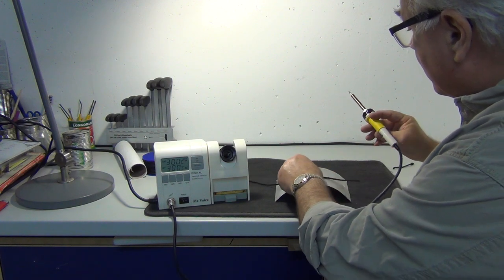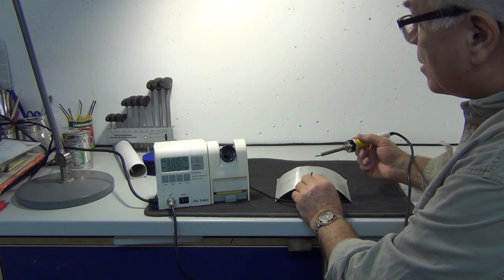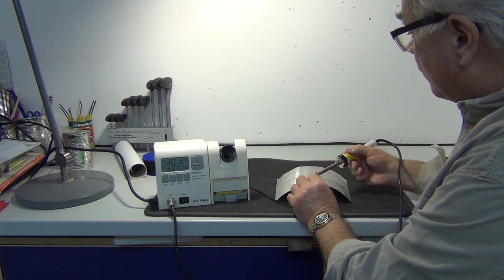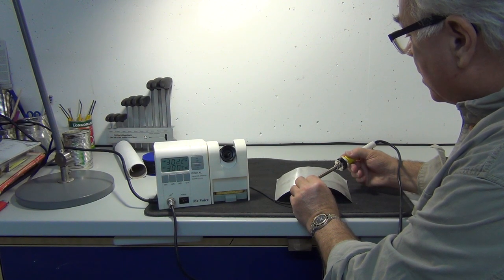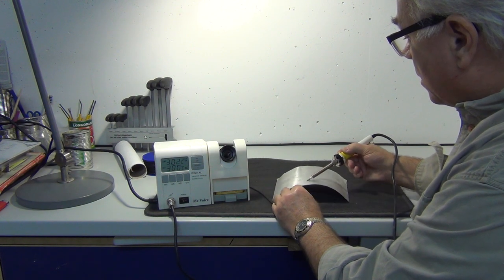And what I did was, took my temperature controlled iron, which is at 300 centigrade, and produced a rather long, slow melt.